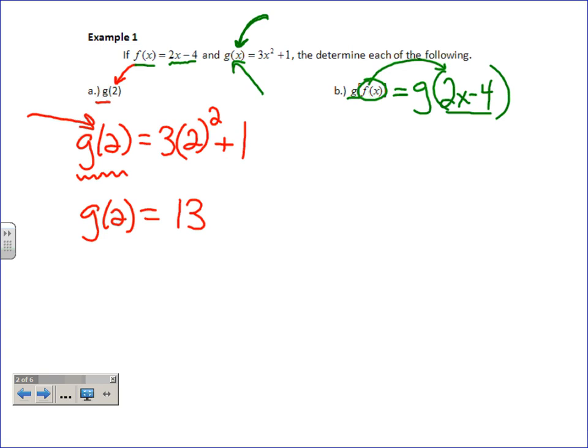And every place I saw that X previously, I'm supposed to replace it now with 2x minus 4, which just happens to be f(x) in this problem. So we start writing. Here's a 3. Should I replace that? Well, no. Don't replace the 3. There's your X. Replace it. And in this problem, we were told to replace it with whatever f(x) was, which happens to be 2x minus 4.